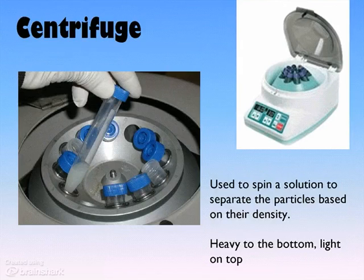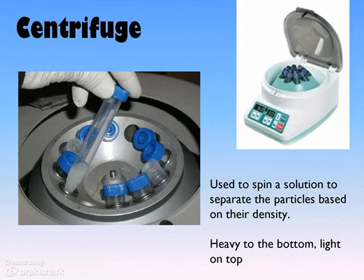The centrifuge works on the same premise as the spin cycle on a washing machine. By putting mixtures into small test tubes — as is being held in the picture on the left — and then allowing those test tubes to spin around very fast. If they spin around really, really fast, it's called an ultracentrifuge.